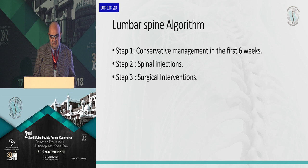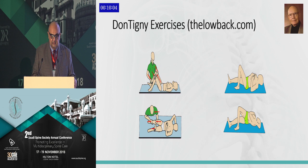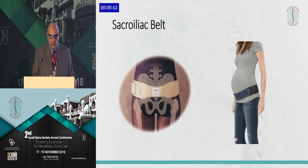We're much more practical when dealing with SI. Conservative measures include education, physical therapy, SI belt, dry needling, TENS unit, and analgesics. This is Richard Dantigny — the guy that fixed my SI joint. He's spent 45 years of his life just dealing with SI. He has a website, thelobeck.com — I encourage all of you to go there. I use a lot of his exercises and have a video on YouTube about how to do them. An SI belt is a very nice addition to the exercises.